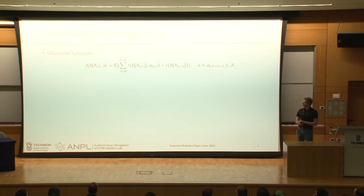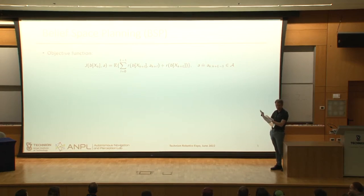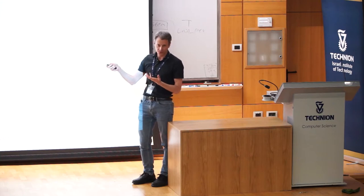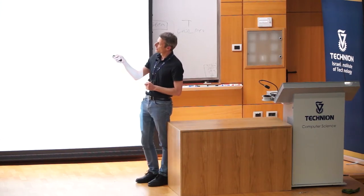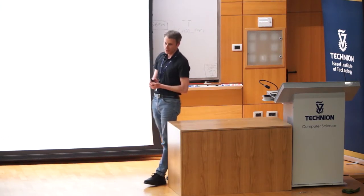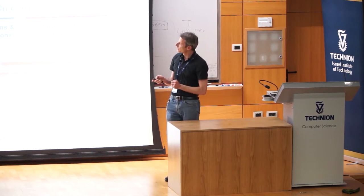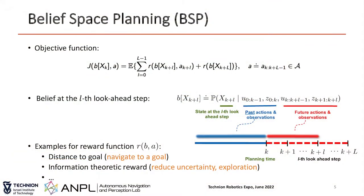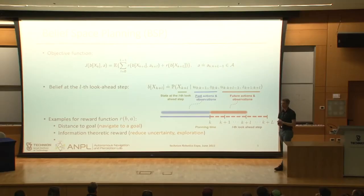Now for the planning objective — don't be worried, this is just conceptual. We want to define a value function: at time k, we reason about l steps into the future and define a reward function R that is a function of future beliefs. The future belief is the future distribution over the state given data we already have and data we foresee receiving. For example, if you imagine a camera, you might consider what image features we'd observe if we take a specific action in the future.